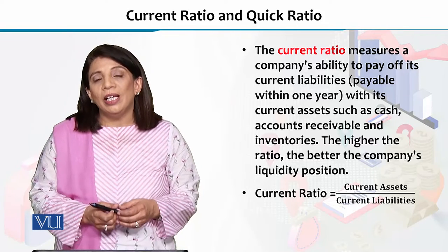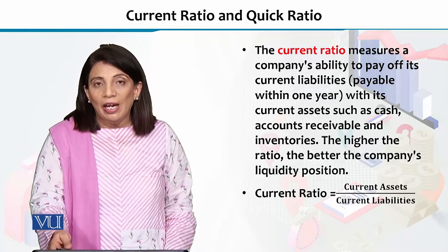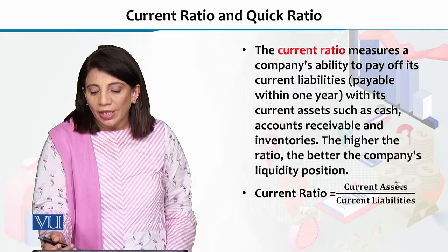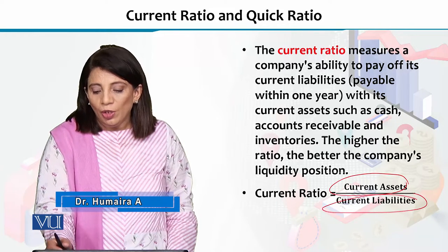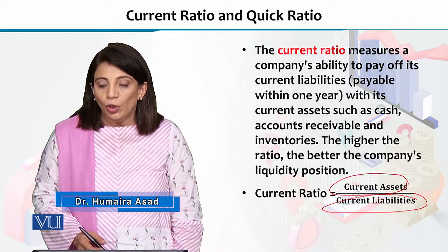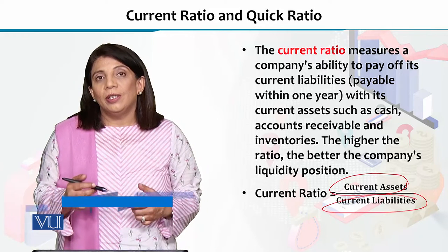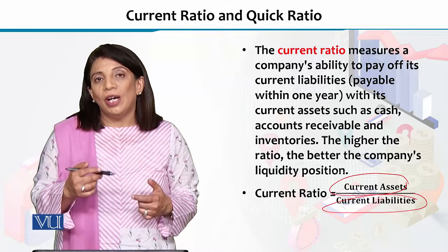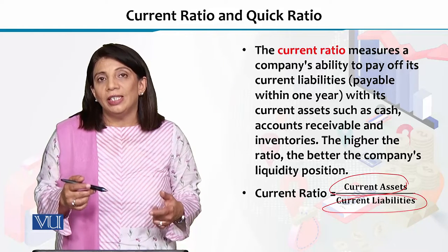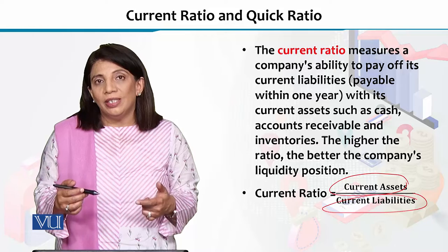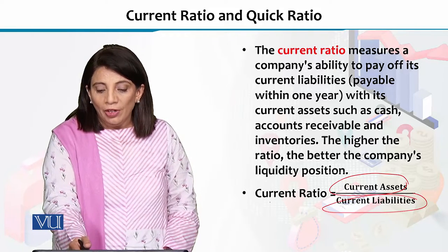Now, if we want to calculate the value of the current ratio, you need to have the value for the current assets, and this will be divided by the total value of the current liabilities. By 'current' we mean whatever is available within one year — current liabilities and current assets both refer to the one-year timeframe.